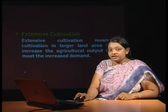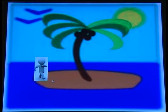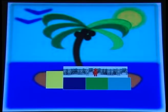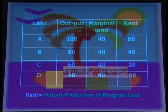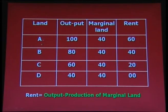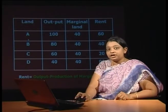To explain this type of cultivation, David Ricardo assumed a situation of an island on which nobody is living. When the first person reaches that island, he will select the best or most fertile land for production purposes. As the population increases, demand for food grain will increase and this will motivate the person to produce on other pieces of land which will be less fertile. The situation will be more clear with the help of a table. Here, as you can see, there are four types of land: land A, B, C and D.